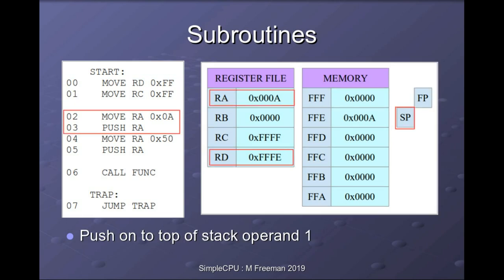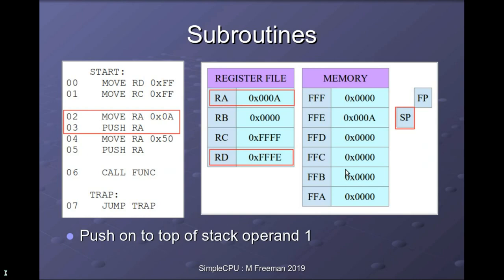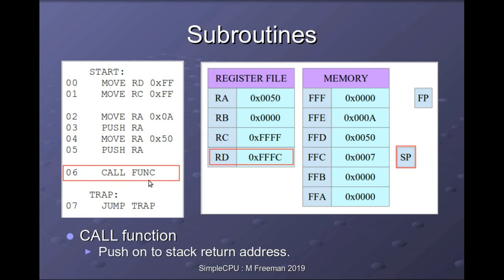Next, we push some data onto the stack. We load register RA with the data to store, then call the push instruction, which writes it to the next free memory location. Looking at the RTL for the push instruction: the stack pointer is decremented by one, moving to the next free location, and the register contents are written there. So the stack pointer decrements to FFE and the value 10 is written. Then we push the next parameter — value 50 — so the stack pointer decrements again and the value is transferred onto the stack.